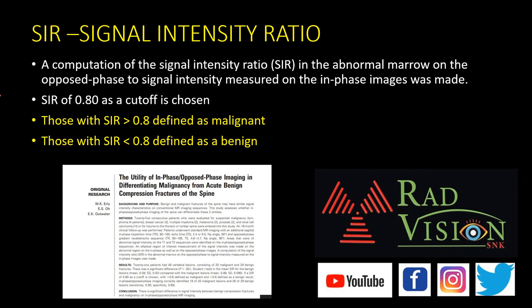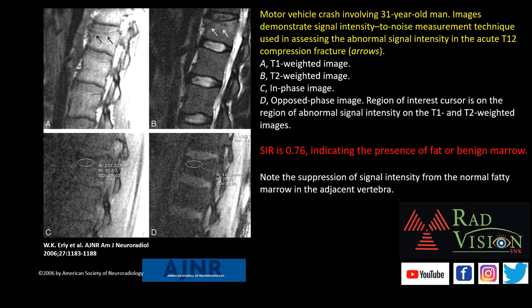The signal intensity ratio (SAR) is the ratio of abnormal marrow signal on opposed-phase imaging to the signal intensity on in-phase imaging, with 0.8 taken as the cutoff. SAR greater than 0.8 is defined as malignant; SAR less than 0.8 is defined as benign. In a motor vehicle accident case with compression fracture in the T2 vertebral body, there is complete suppression of signal intensity from normal fatty marrow at the fracture site, and the SAR is less than 0.8, indicating a benign fracture.